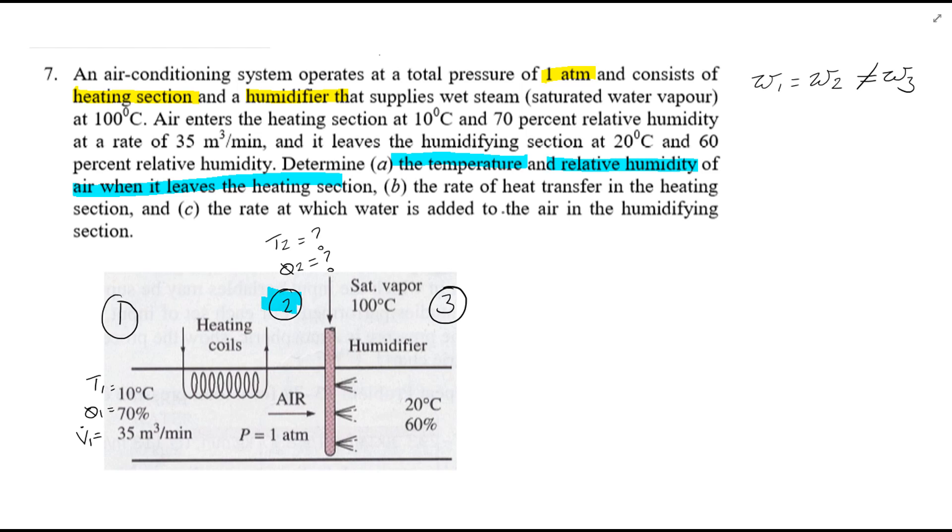Okay, as we previously stated, omega 1 is equal to omega 2. Omega 1 can be found, given the temperature of 10 degrees and relative humidity of 70%. And you will find using the psychrometric chart figure A31 you get 5.3 grams of H2O per kilogram dry air or thereabout.